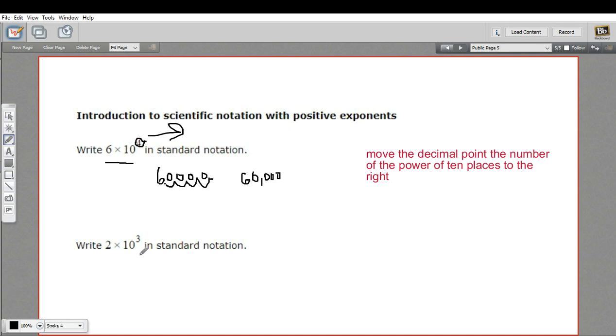Let's try another one. 2 times 10 to the 3rd. So I've got 2. There's my decimal point. And then I need to move it this many spaces to the right. So 1, 2, 3. And then fill in with zeros. And we get 2,000.